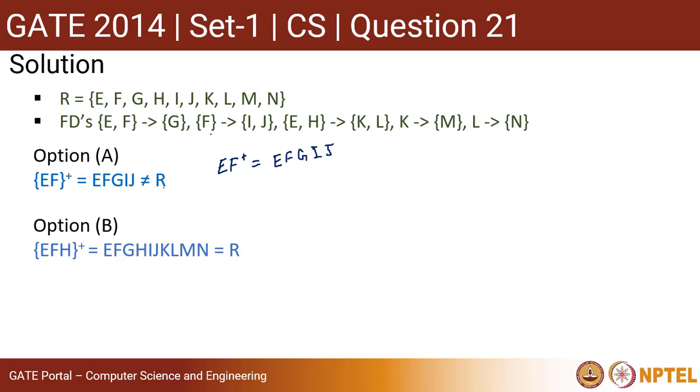If we go for option B, we have EFH. To find out the closure of EFH, let me have it as a set. By default, I will have EFH.